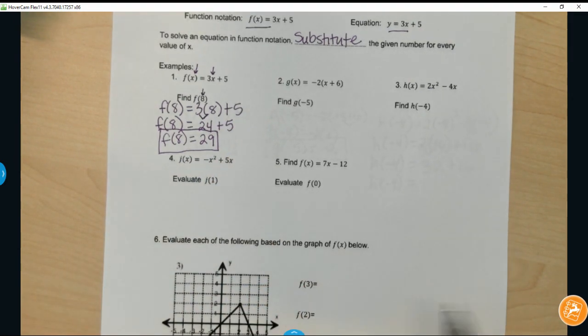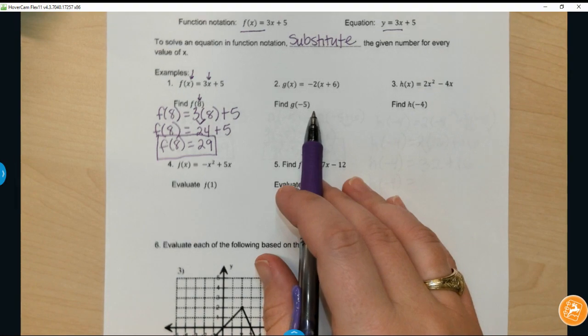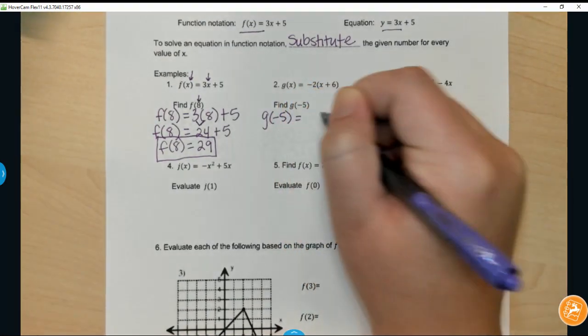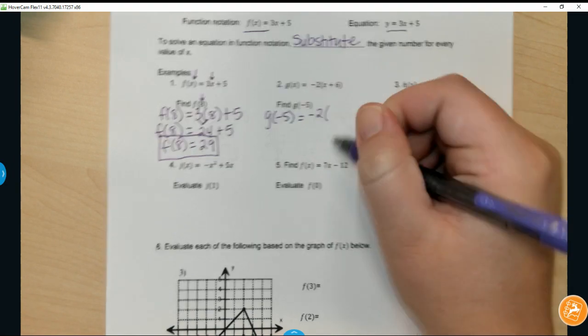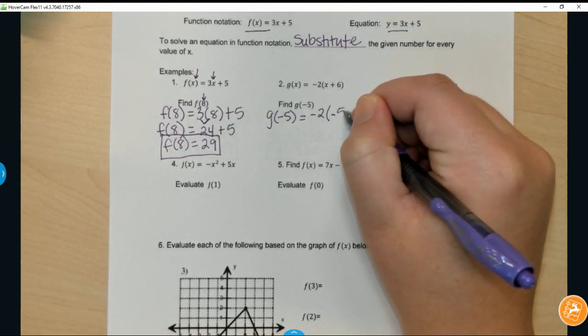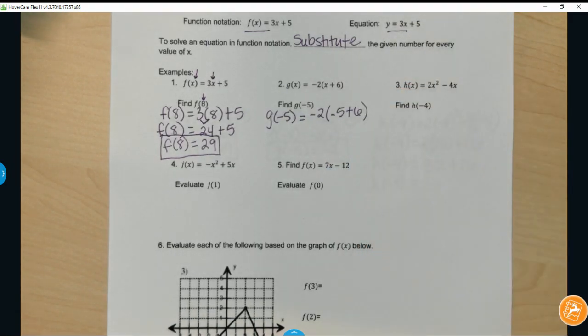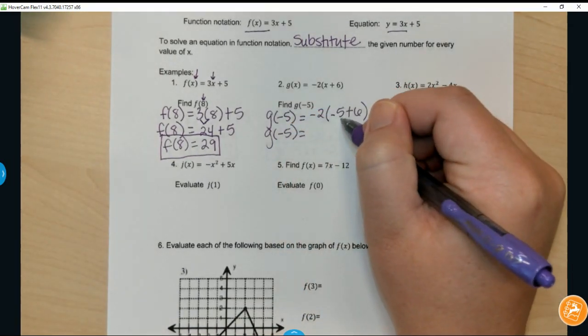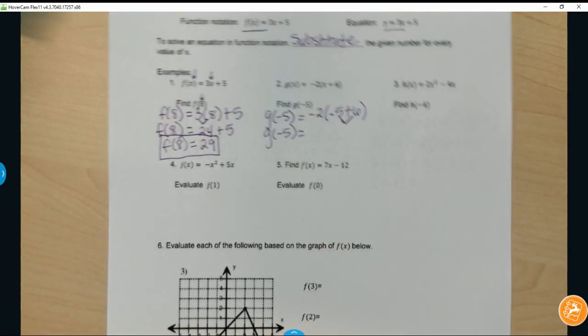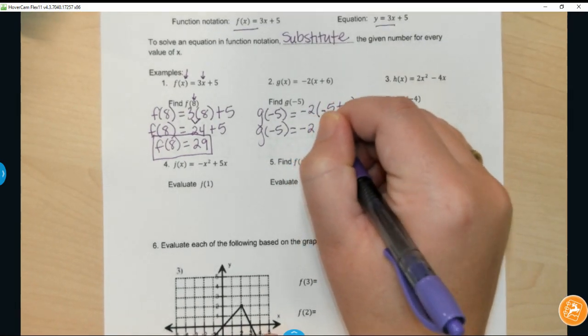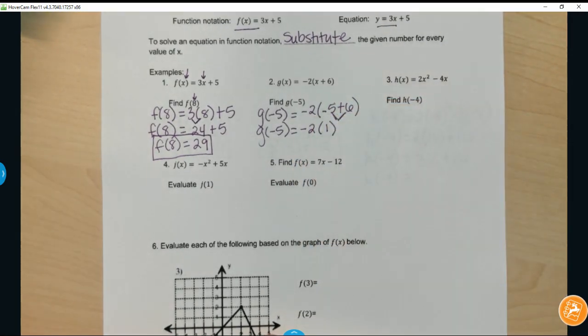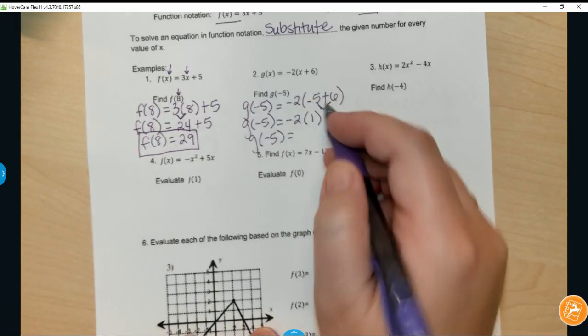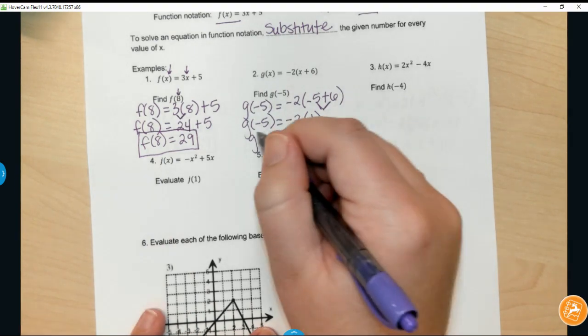For number 2, it's saying g(-5), so g(-5) equals negative 2 times, and that's where my x is, so negative 5 plus 6, bringing it down each step. This right here, negative 5 plus 6, will give us a positive 1. And for my final step, I would multiply those two numbers together: negative 2 times 1 gives me negative 2.